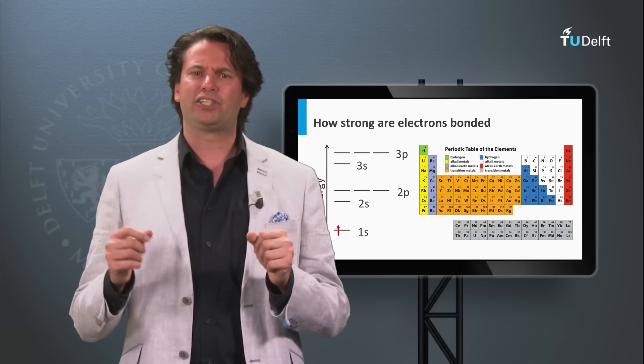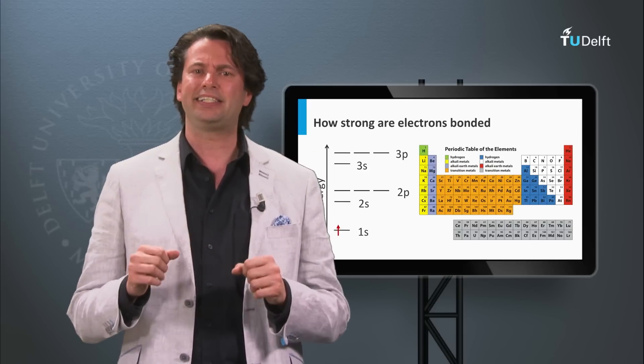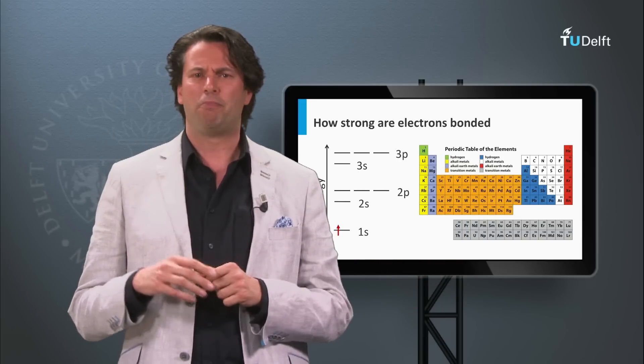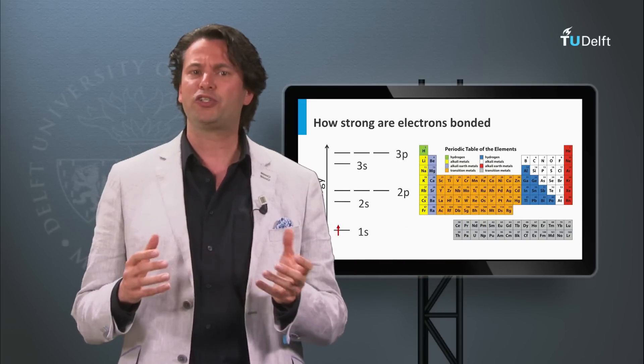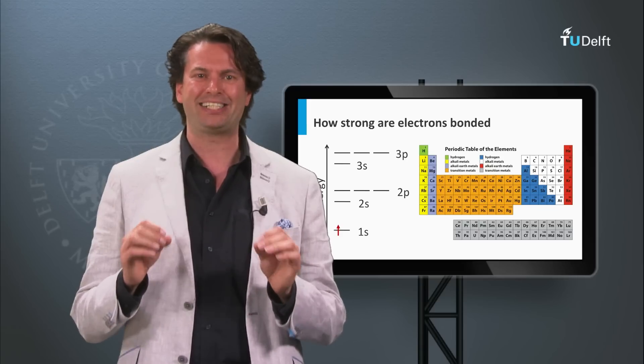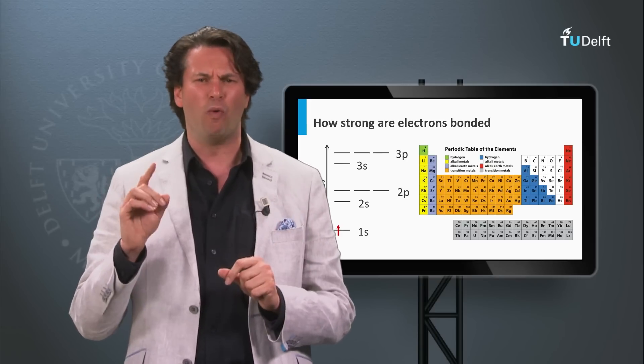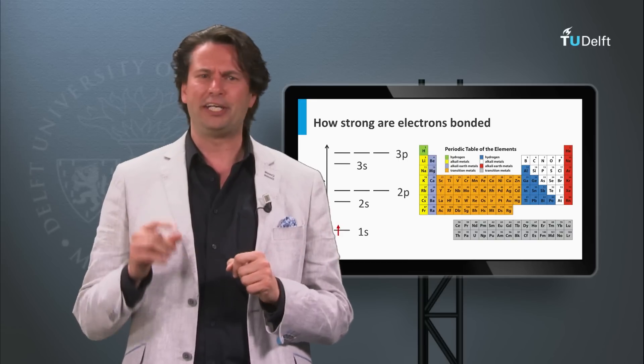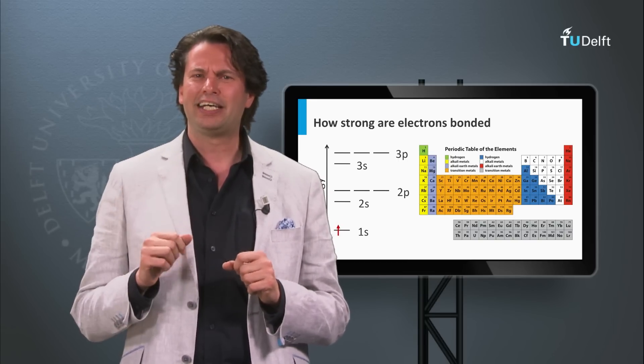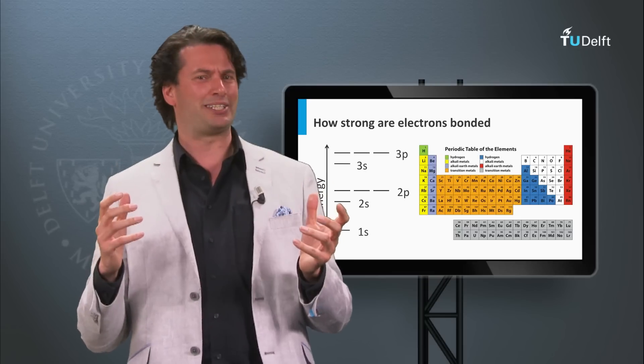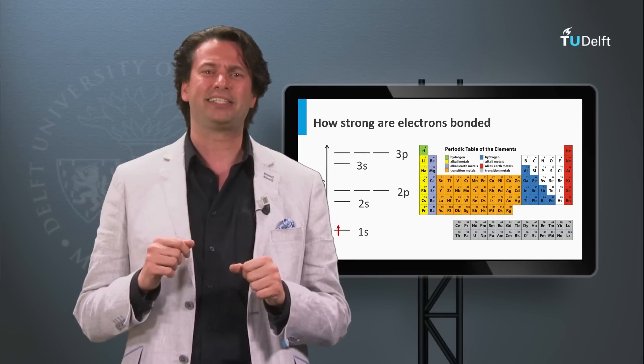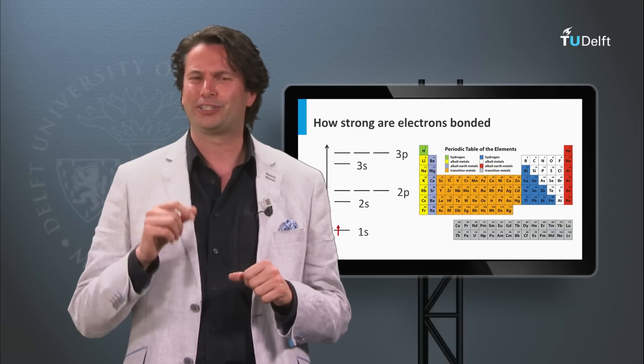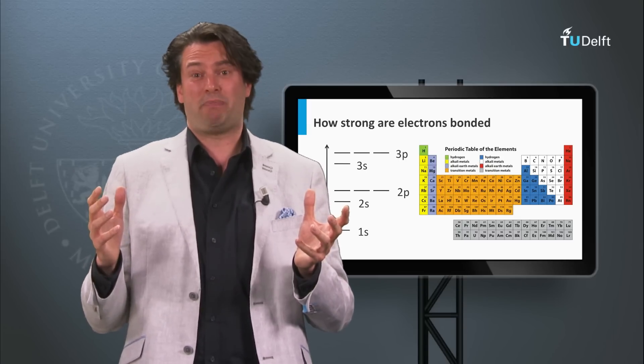These discrete energy levels can help you understand how the periodic table of elements is built up. Before we do that, we have to discuss one important additional property of the electron and one important law of quantum mechanics. The important property of the electron is that electrons can have spin. The important law in quantum mechanics is the Pauli exclusion principle. First, electrons have spin. What is a spin?